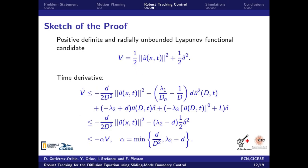In order to prove the global stability of the closed-loop error system, we have used a positive definite and radially unbounded Lyapunov functional as shown in this slide. After some calculations,